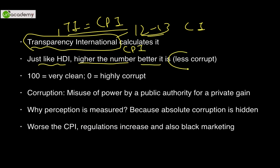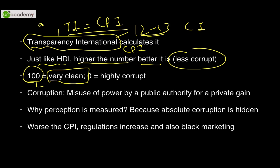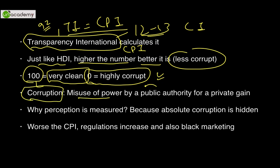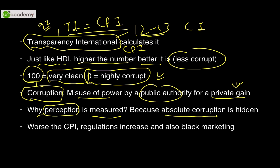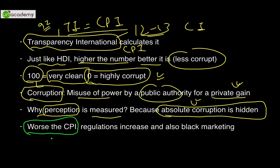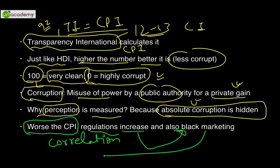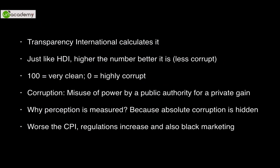Just like the HDI, a higher CPI score is better — it means less corruption. A score of 100 is theoretically very clean; the best-performing countries today score around 92. Zero represents highly corrupt, though that is also theoretically extreme. We measure perception because absolute corruption is hidden and cannot be directly measured. There is also a correlation: as CPI worsens, government regulations increase, which increases black marketing, further worsening CPI — creating a vicious cycle of corruption.